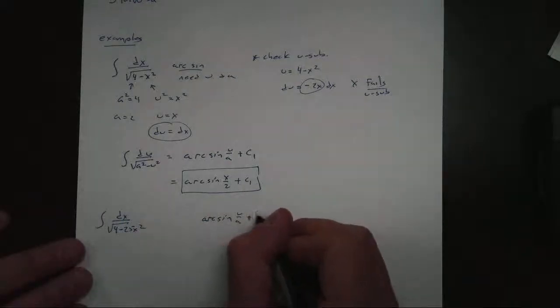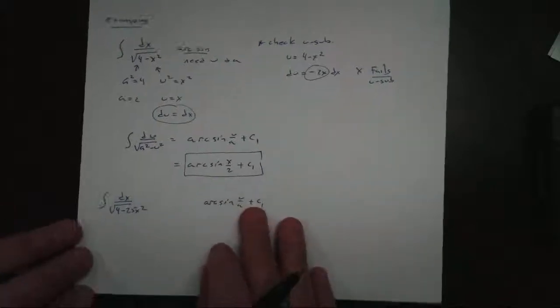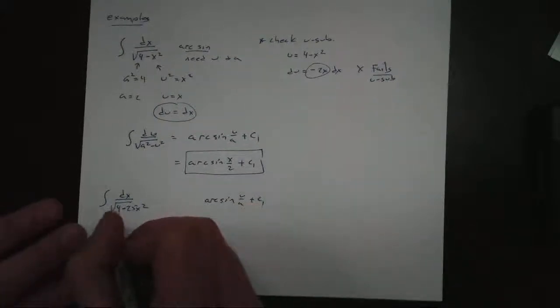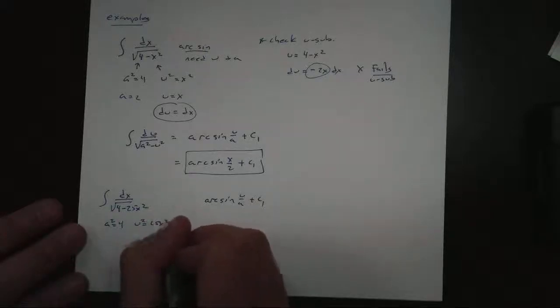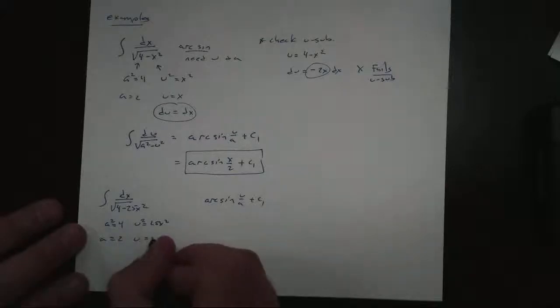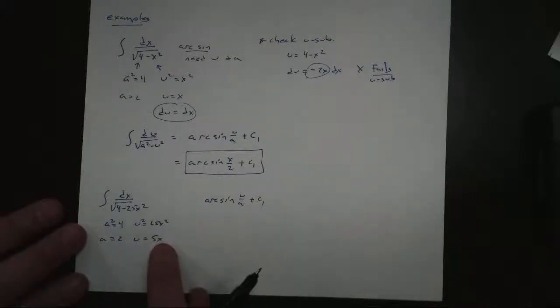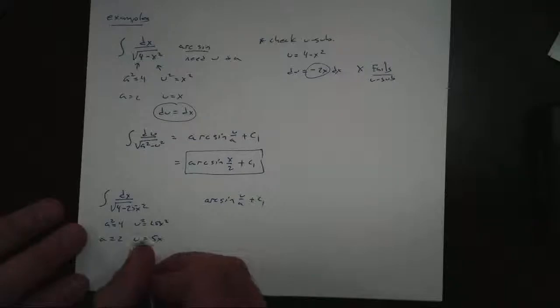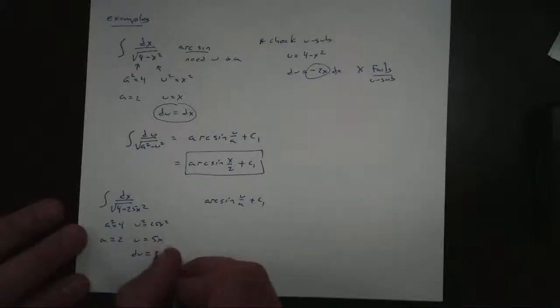And that's u over a plus c. I like to write it out. The more I write it out, the more I remember it. So I know a squared is 4, u squared is 25x squared. A again is 2, but u is 5x. Now, this becomes a problem for us because when I replace my dx, I get du equals 5 dx. So dx equals du over 5. It's this over 5 we want.